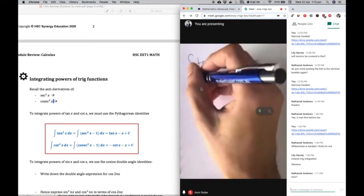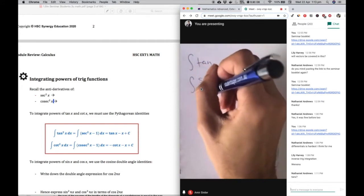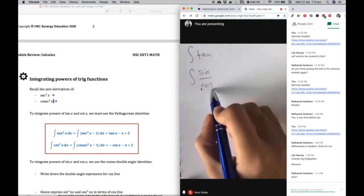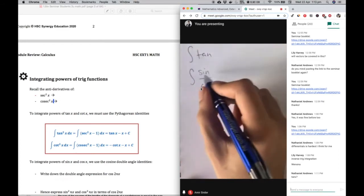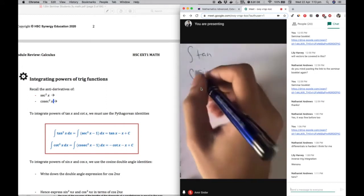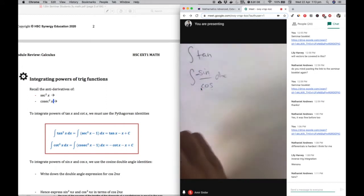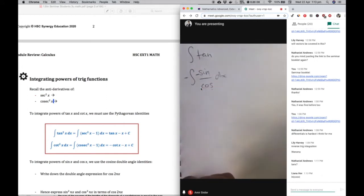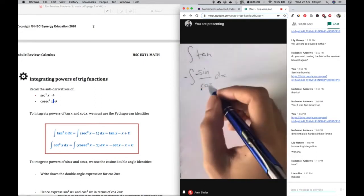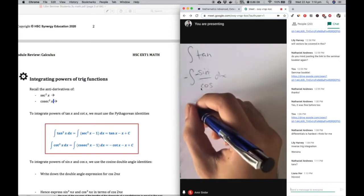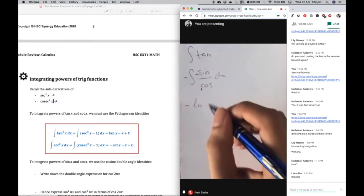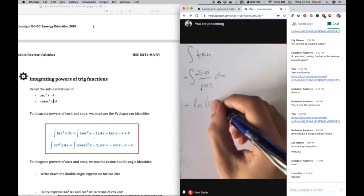Just remember, tan is sine over cos, and the derivative of cos is actually minus sine, right? So we need the derivative to be up there. Because there's no minus at the top, we're going to put a minus in there and then put a minus at the front here. And now we have the derivative at the top.